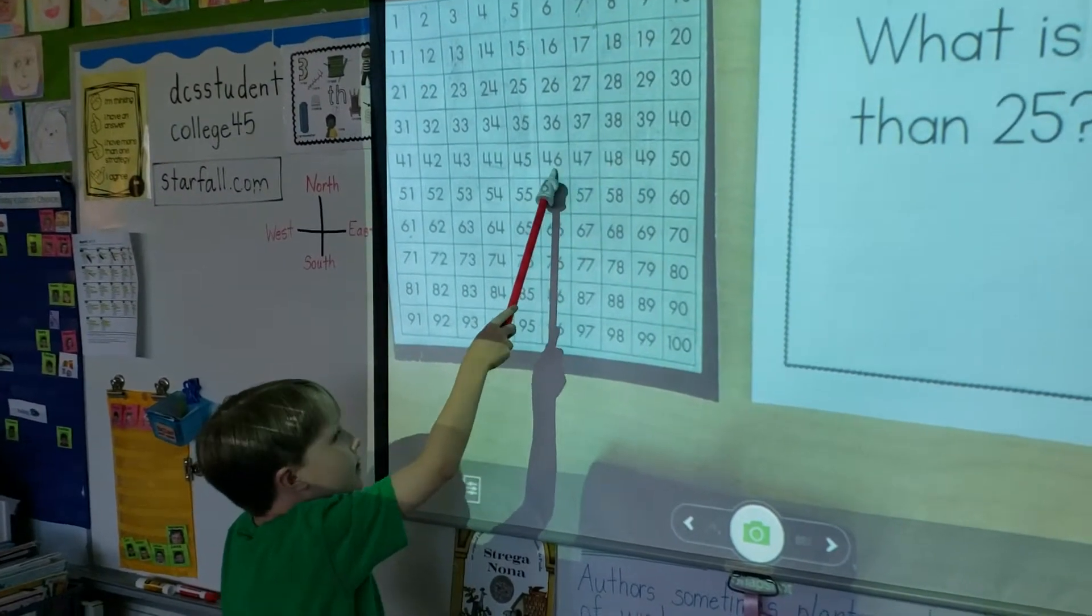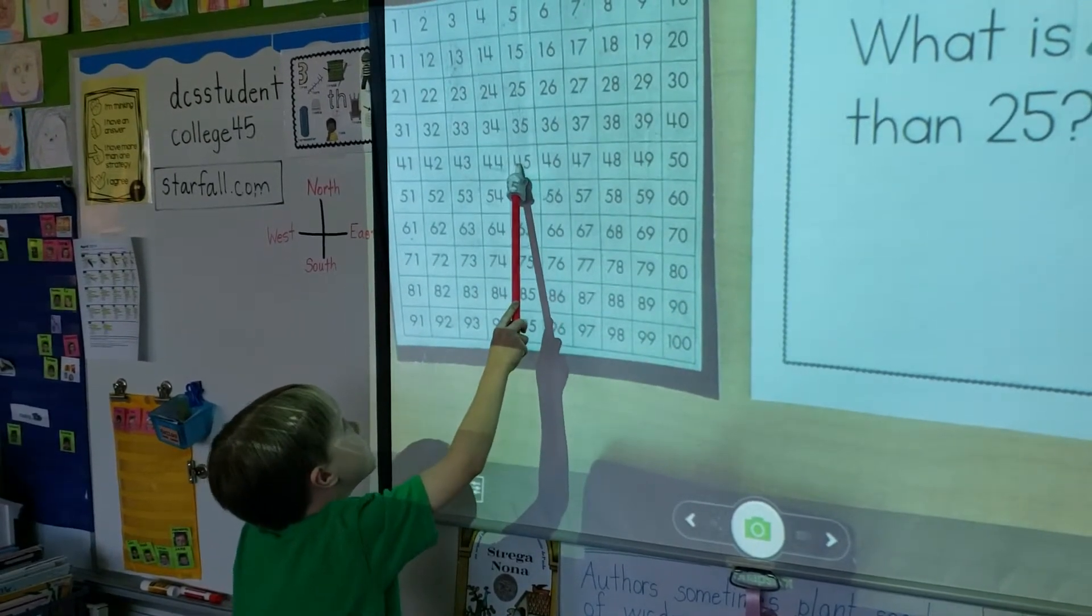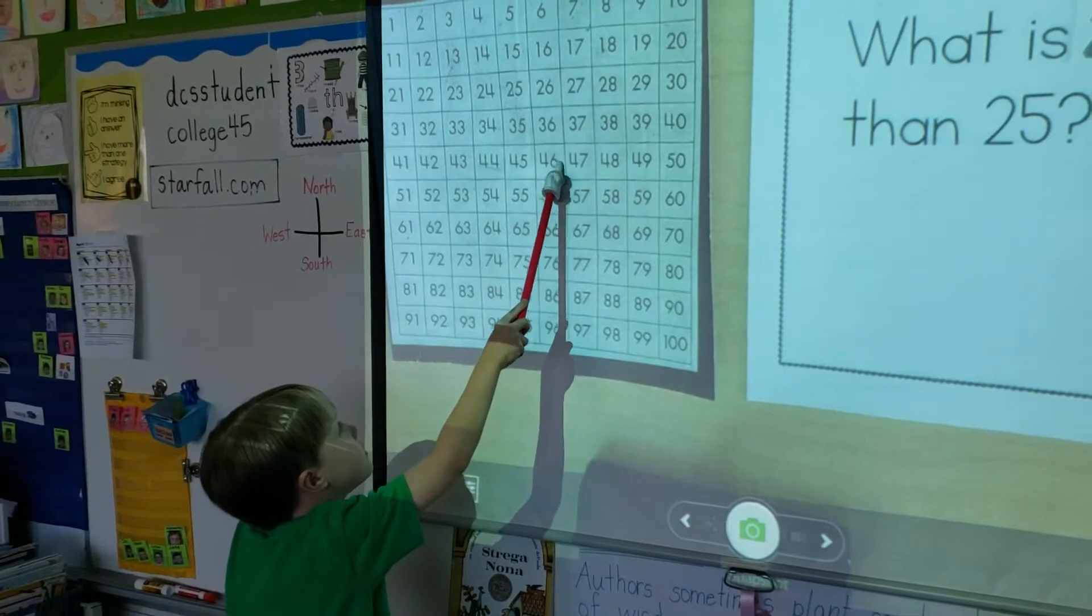Okay, so we're adding two tens. Yes, so see, 10, 20, and then go one more, 21.